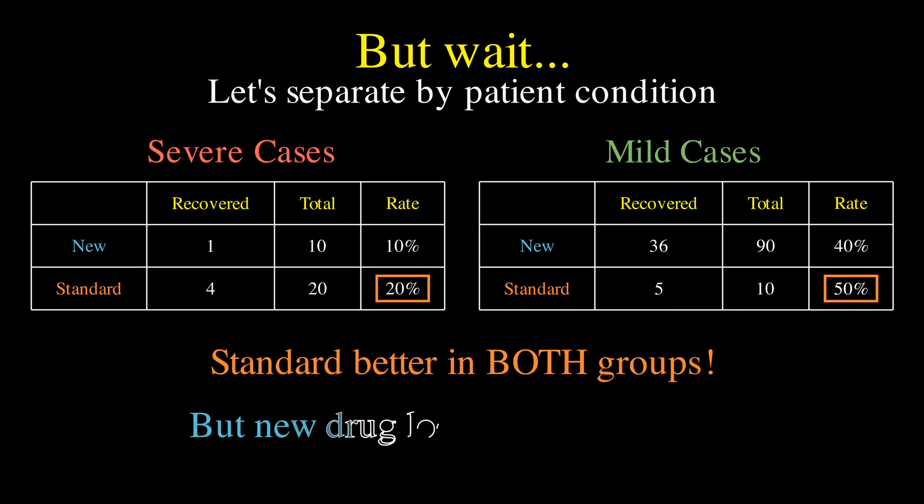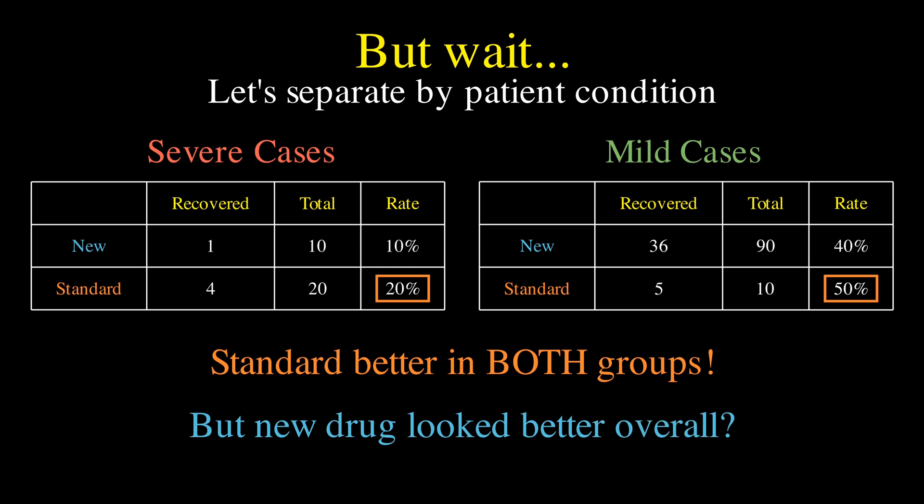So, why is that? Well, this paradox arises because the new drug was tested predominantly on mild cases where both treatments do better, making the overall success rate misleading when comparing across different patient populations.